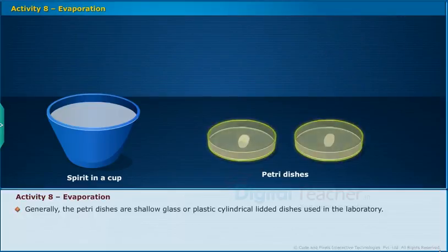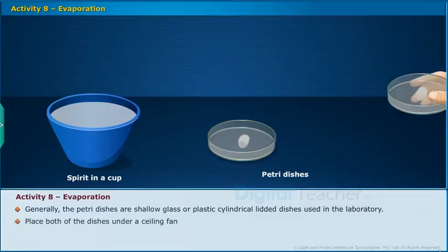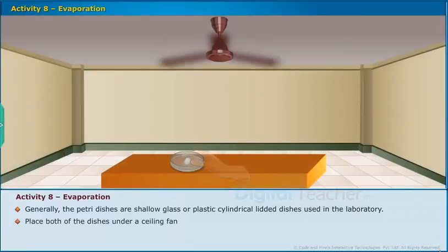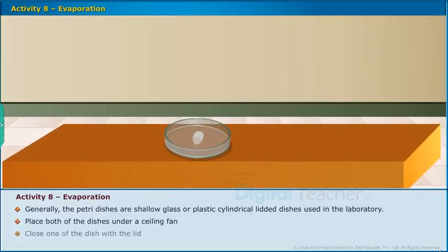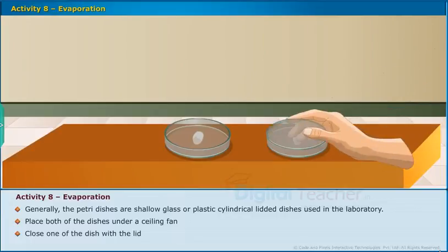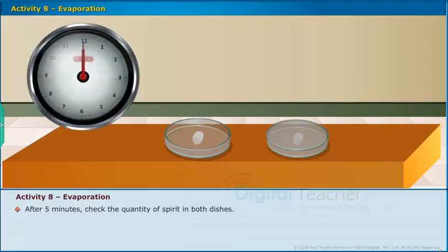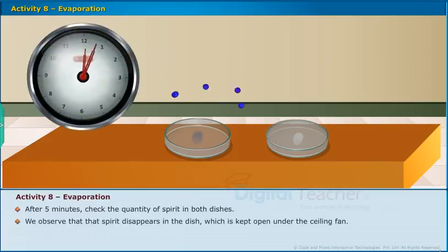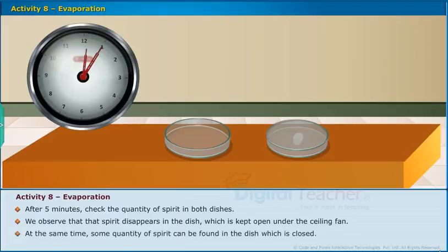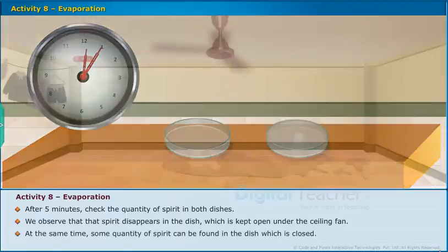Petri dishes are shallow glass or plastic cylindrical lidded dishes used in the laboratory. Place both petri dishes under a ceiling fan and close one of the dishes with the lid. After five minutes, check the quantity of spirit in both dishes. We observe that spirit disappears in the dish kept open under the ceiling fan, while some quantity of spirit can be found in the closed dish.